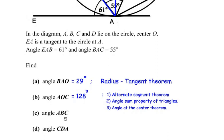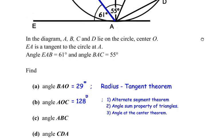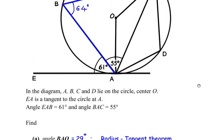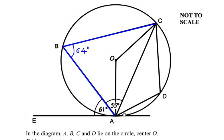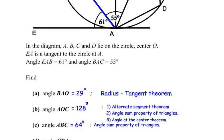Now for the third angle, angle ABC: we already found this value when solving the previous part. Angle ABC is 64 degrees, obtained by the angle sum property of a triangle.